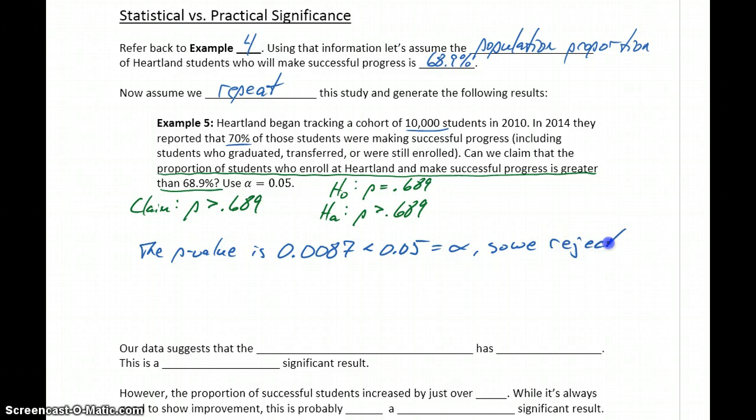So we reject the null hypothesis. So I'm doing a much shorter version of this write-up here. But we're rejecting the null hypothesis, meaning we would conclude that the proportion is greater than 68.9%. So there's sufficient evidence to conclude that more than 68.9% of students make successful progress. So in this case, the claim would be supported.